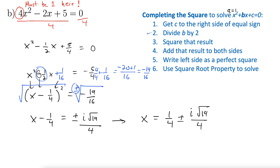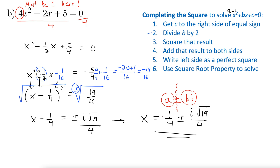Here I'm resisting the temptation to write this all over a single denominator of 4, because we want to have this in a plus or minus bi form. There's almost like a wall between our reals and our imaginaries — you don't want to combine them by putting them over the same denominator. So I'm going to leave them separate just as the answer is written here.